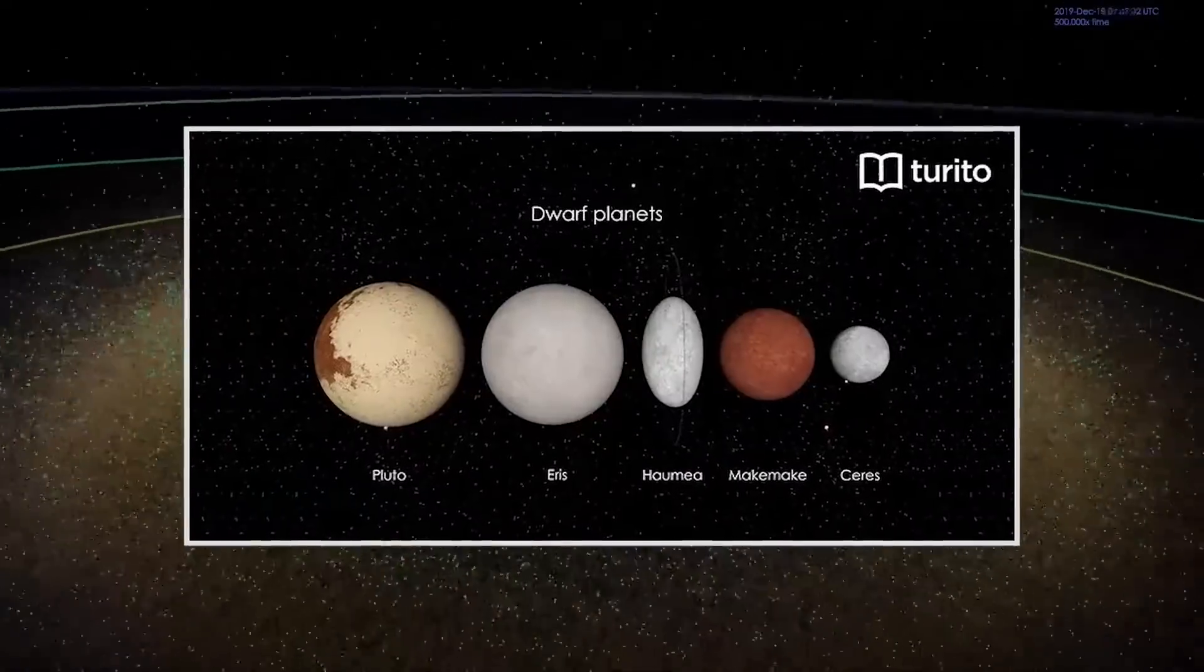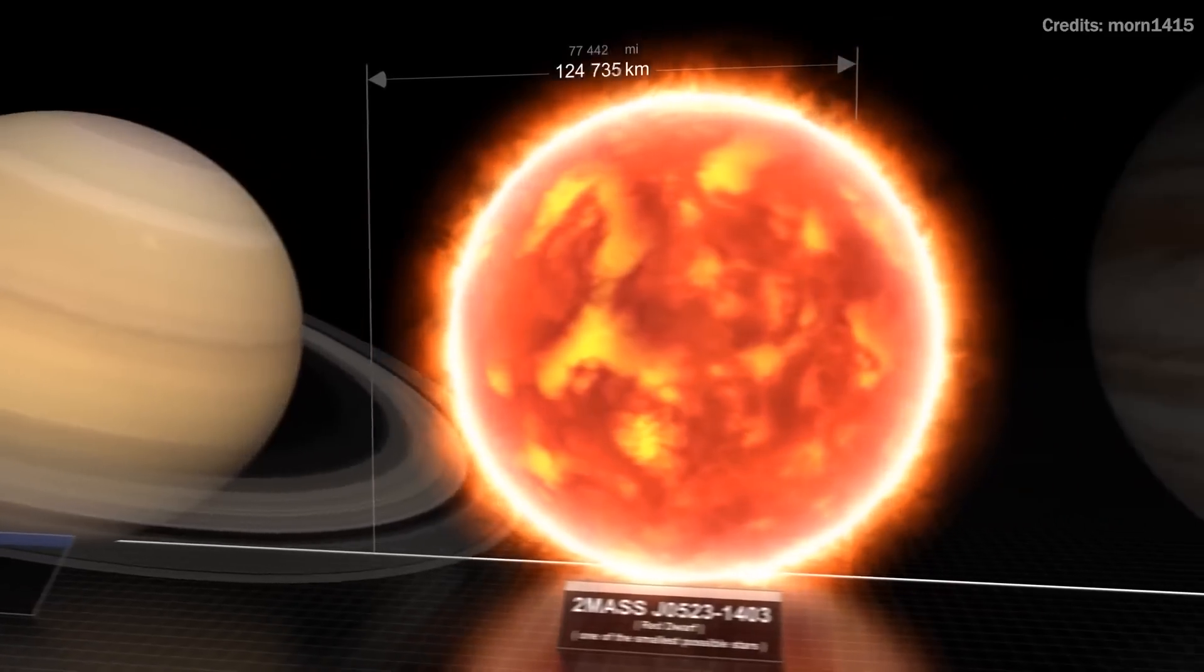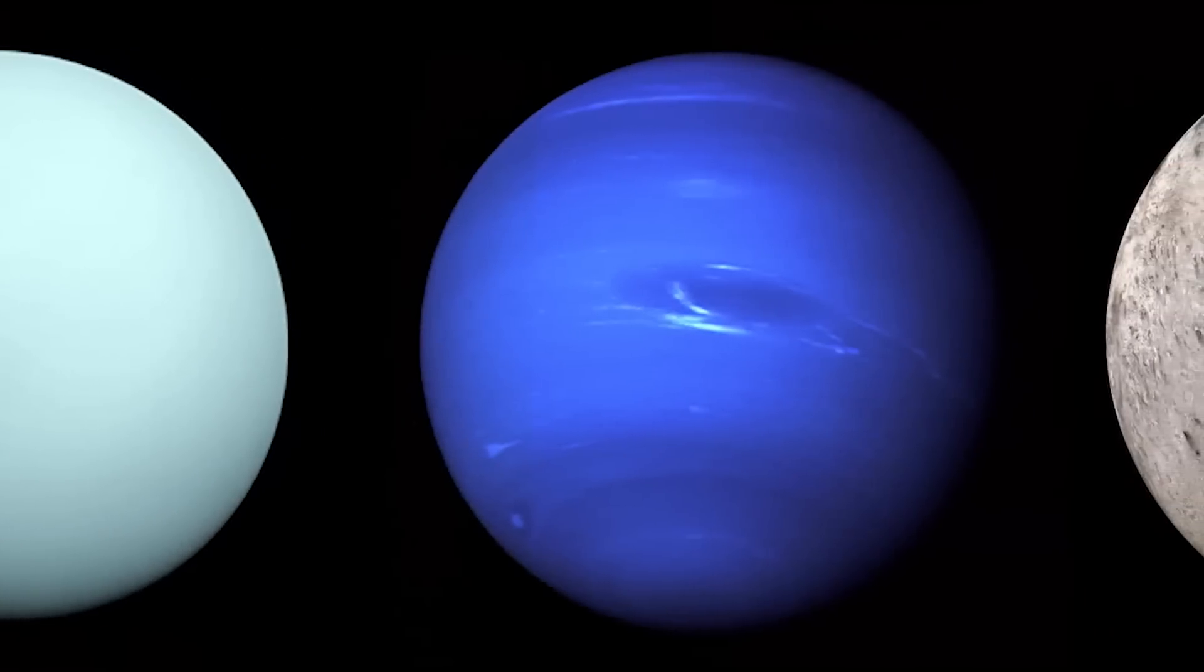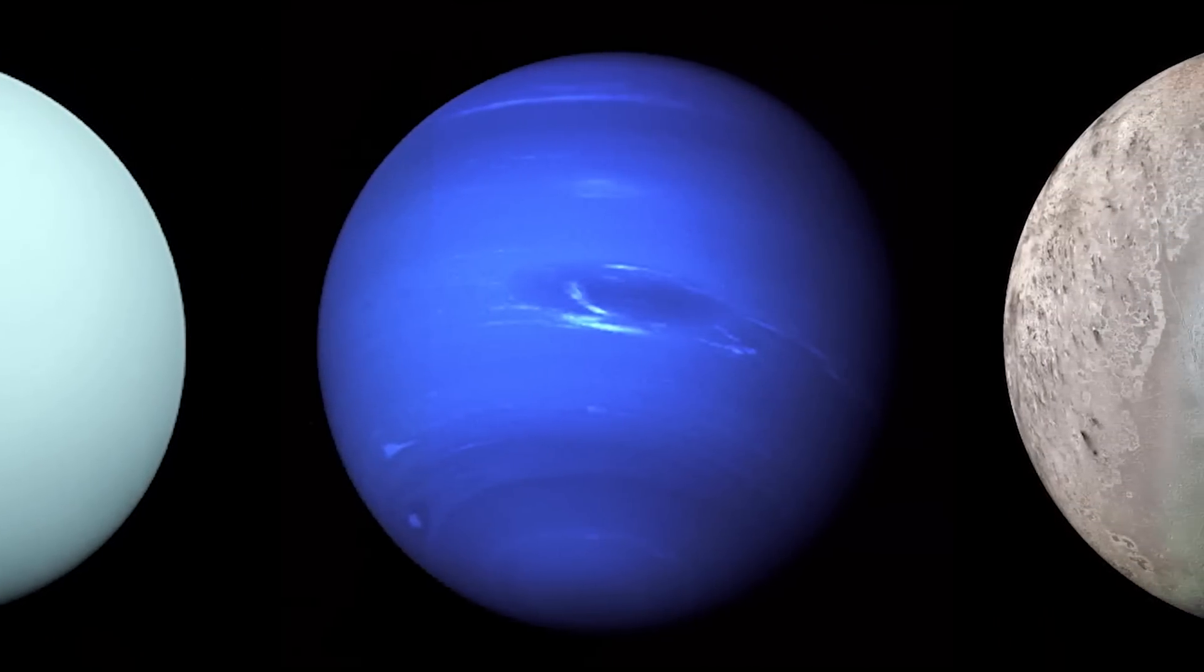He refers to them as dwarf planets. Stern believes that just as the galaxy's most common stars are cool dwarfs much smaller than our sun, some ice balls may be the galaxy's most common type of planetary body.